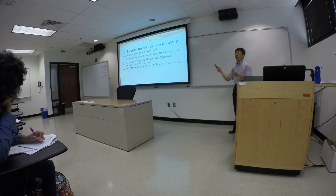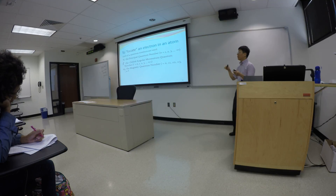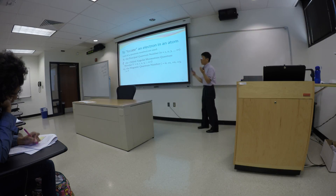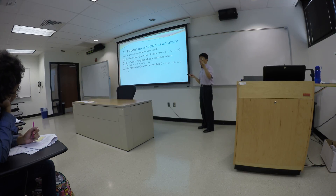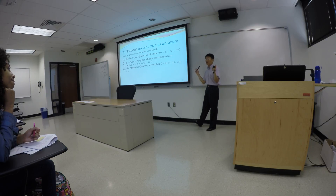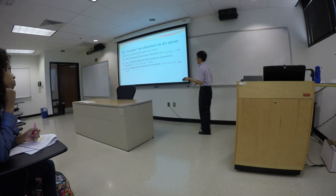If l equals zero, ml can only be zero. If l equals one, ml has three values: negative one, zero, and positive one. If l equals two, there are five possible values for ml: negative two, negative one, zero, one, and two. And if l equals three, there are seven values associated with ml — negative three all the way to positive three, including zero, as integer numbers.